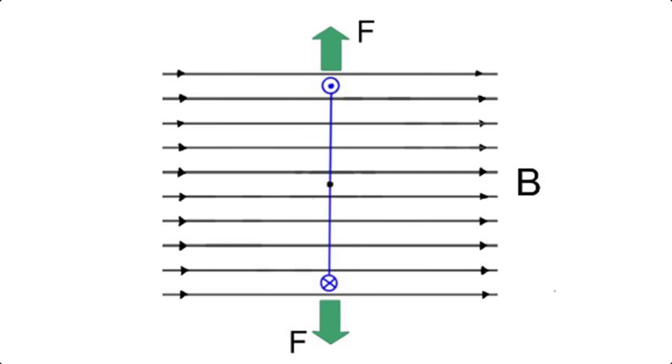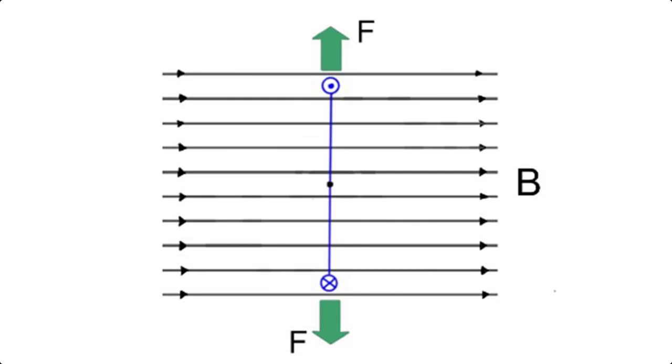The loop will continue to oscillate about the normal to the magnetic field until, eventually, friction in its bearings brings it to rest normal to the magnetic field.